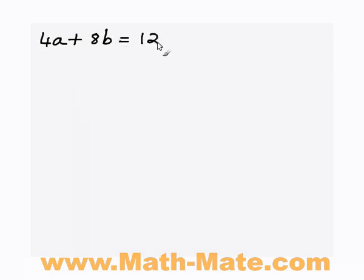I'm going to demonstrate it with two simultaneous equations here: 4a plus 8b equals 12, label that as equation number 1, and also 6a minus 4b equals negative 14, and I'm going to label that as equation number 2.